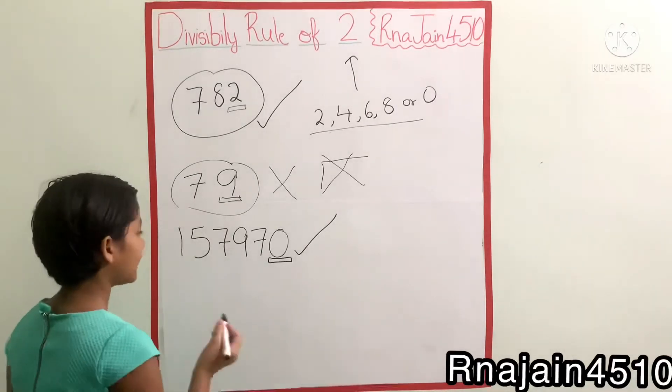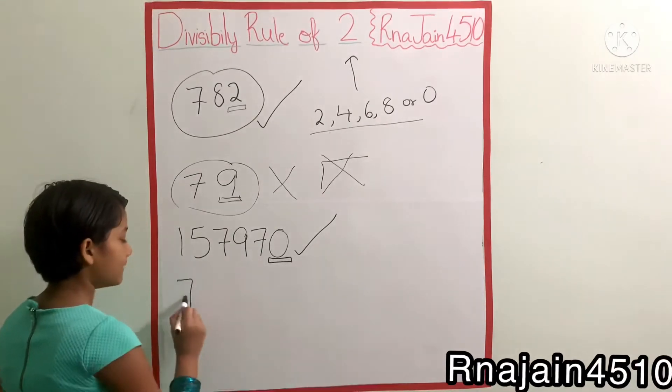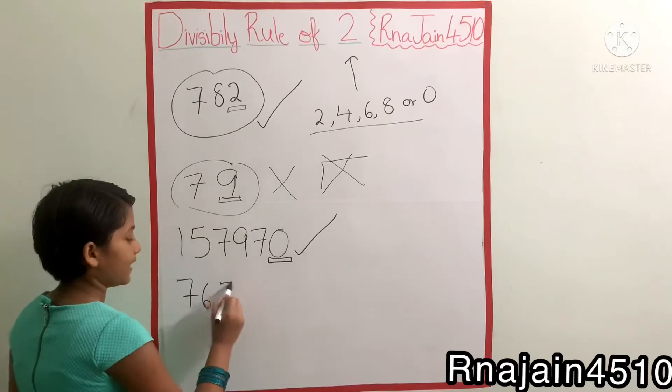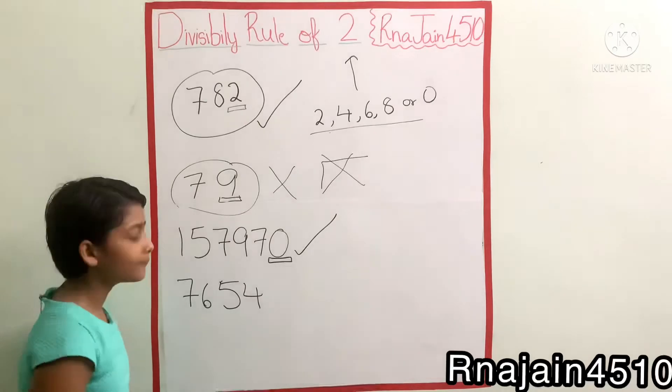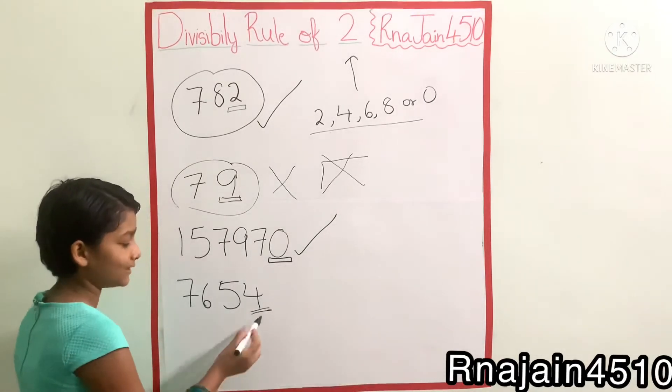So the first number is divisible by two. Another number, 7654. Is this divisible by two? Notice this number.